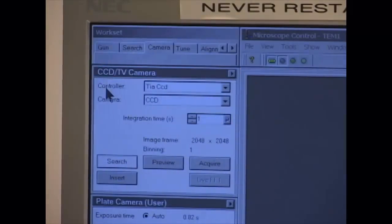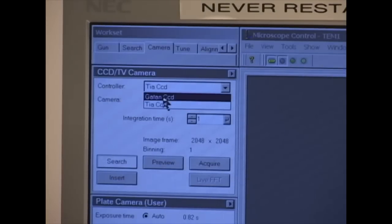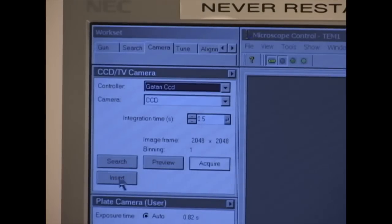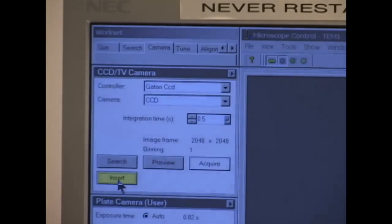Under Controller, select GATAN CCD. Click Insert, and it will turn yellow to show it is active.